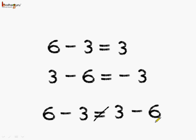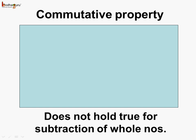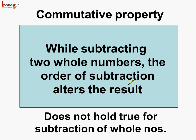So we can say 6 minus 3 is not equal to 3 minus 6. If we reverse the order of subtraction, the result is altered — here it is 3 and here it is minus 3. So the commutative property does not hold true for the subtraction of whole numbers; the order of subtraction alters the result.